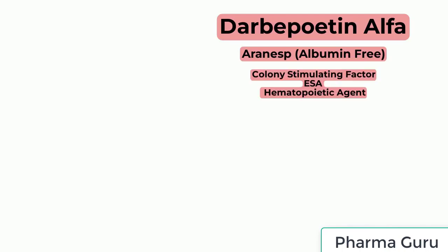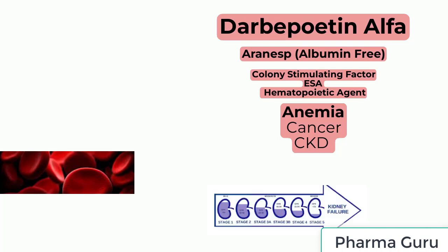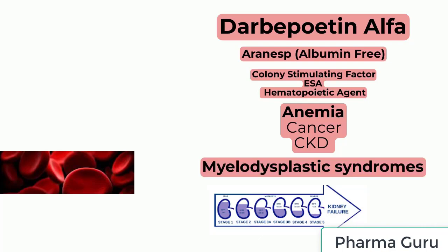Darbepoetin alpha: colony stimulating factor, erythropoiesis stimulating agent, hematobiotic agent. Used for anemia due to chemotherapy in patients with cancer, and for the treatment of anemia in patients with non-myeloid malignancies when anemia is due to the effect of concomitant myelosuppressive chemotherapy — with a minimum of two additional months of planned chemotherapy upon initiation. Also used for the treatment of anemia due to chronic kidney disease, including patients on dialysis and patients not on dialysis. Off-label use: management of symptomatic anemia in lower-risk myelodysplastic syndromes.